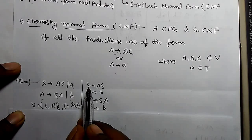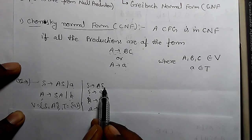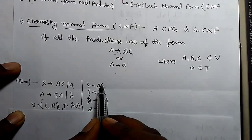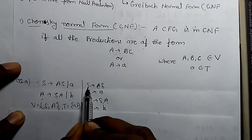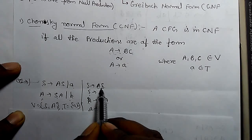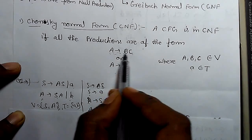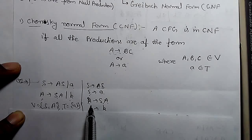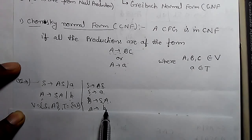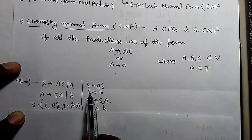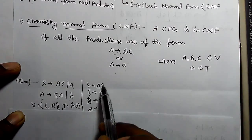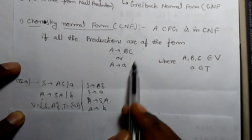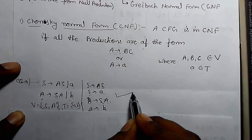We can see S derives A and capital S—both are variables, and a single variable derives two variables. So it is part of CNF. S derives a is also part of CNF. A derives SA and A derives b. So this derivation is equivalent to CNF definition, so it is in CNF.